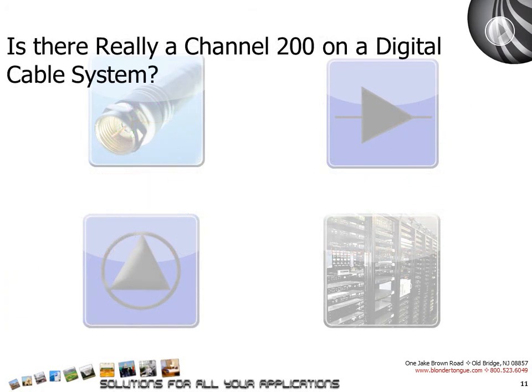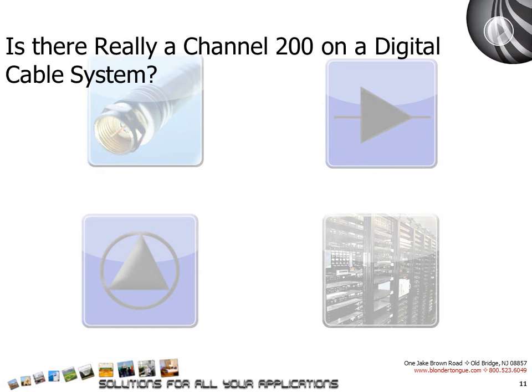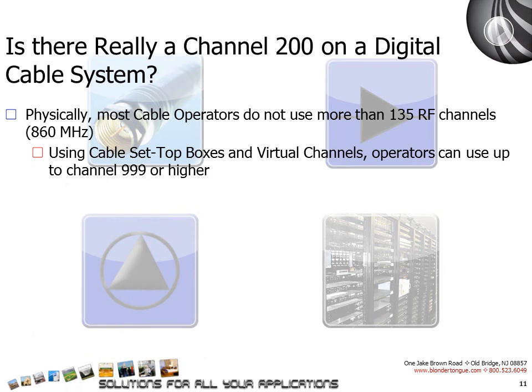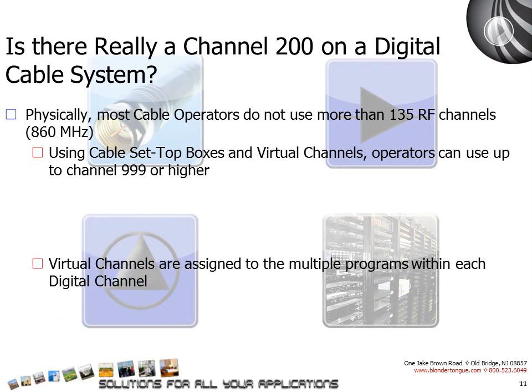Is there really a channel 200 on a digital cable system? No. Physically, most cable operators do not use more than 135 RF channels on their system, up to 860 MHz. Using cable set-top boxes and virtual channels, they can display program numbers up to channel 999 or higher. Virtual channels are assigned to the multiple programs within each digital channel.